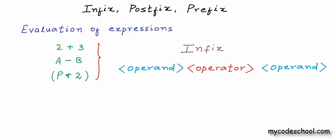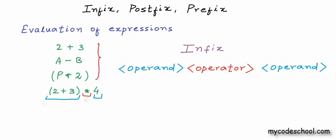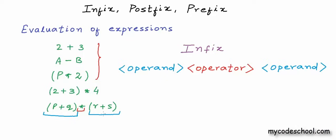An operand doesn't always have to be a constant or variable — an operand can be an expression itself. In this fourth expression, one of the operands of the multiplication operator is an expression itself, and the other operand is a constant. In the fifth expression, both operands of the multiplication operator are expressions. We have three operators: for the first plus operator, p and q are operands; for the second plus operator, r and s are operands; and for the multiplication operator, the operands are the expression p plus q and the expression r plus s.